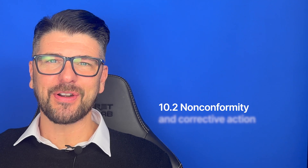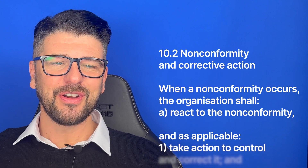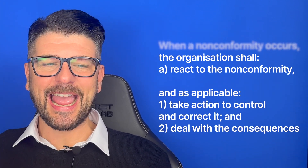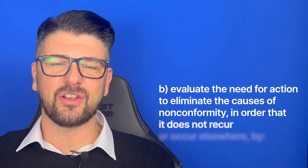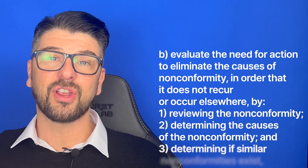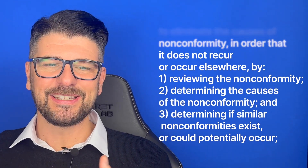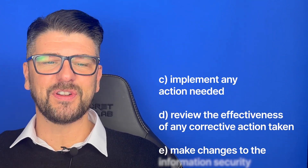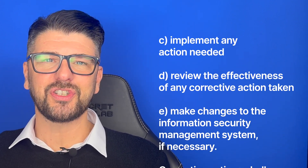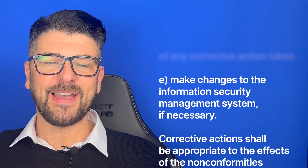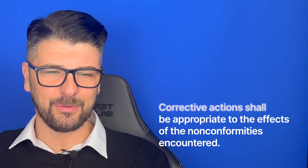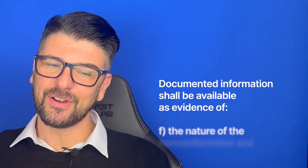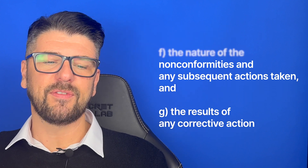10.2, Non-conformity and corrective action. When a non-conformity occurs, the organisation shall react to the non-conformity and, as applicable, take action to control it, correct it, and deal with the consequences. It shall evaluate the need for action to eliminate the cause of non-conformity in order that it does not reoccur or occur elsewhere by reviewing the non-conformity, determining the causes, and determining if similar non-conformities exist or could potentially occur. Implement any action needed. Review the effectiveness of any corrective action taken. Make changes to the information security management system if necessary. Corrective action shall be appropriate to the effects of the non-conformities encountered. Documented information shall be available as evidence of the nature of the non-conformity, any subsequent action taken, and the results of any corrective action.